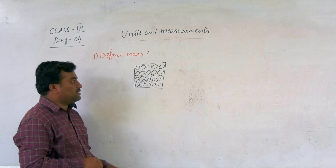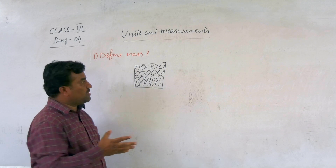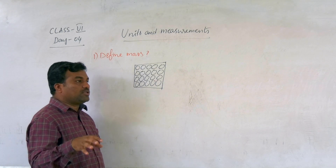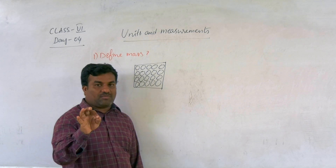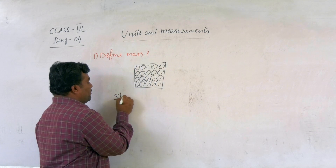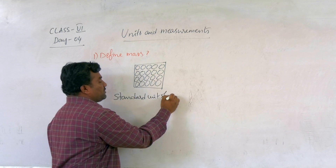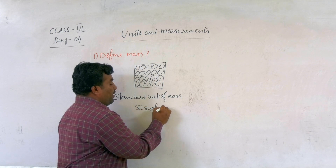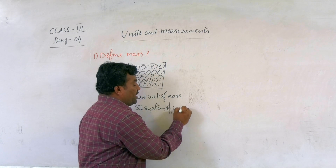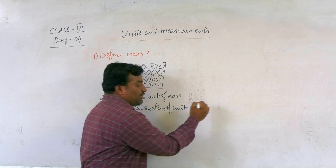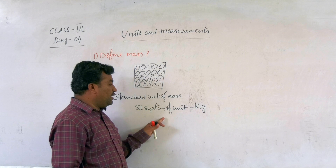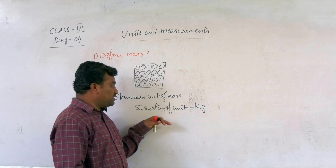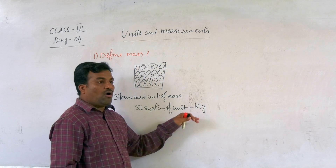Next, we are going to discuss: what is the standard unit of mass? The standard unit always refers to the SI system of units. The SI system unit of mass is equal to Kg — kilogram. Kg is the standard unit of mass.